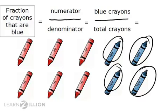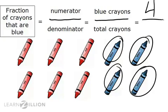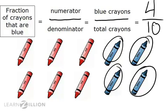Now I need to write the fraction four-tenths. The fraction would be the crayons that are blue over the total number of crayons. Since there were four blue crayons, I would write four as my numerator. Then I would draw a line. For the denominator, I would write the total number of crayons, which is ten. The fraction of crayons that are blue is four-tenths. I could read this fraction as four over ten, four out of ten, because four out of a total of ten crayons are blue, or simply four-tenths.